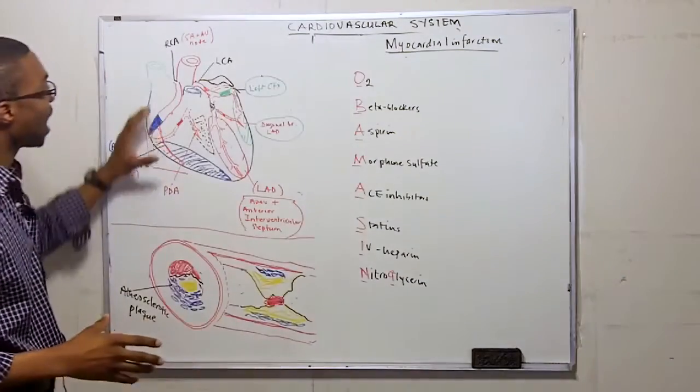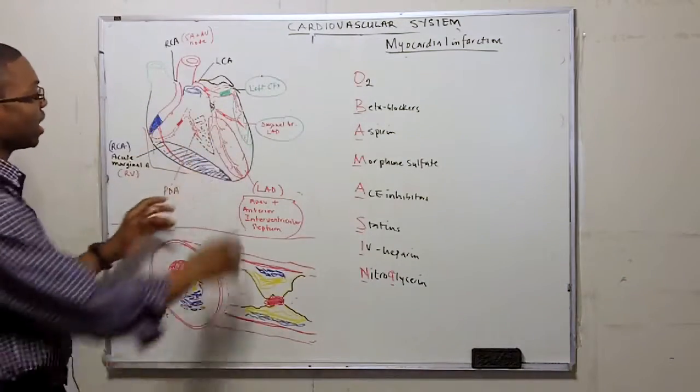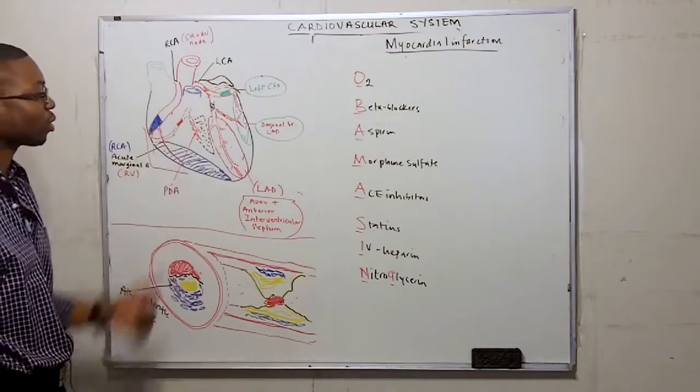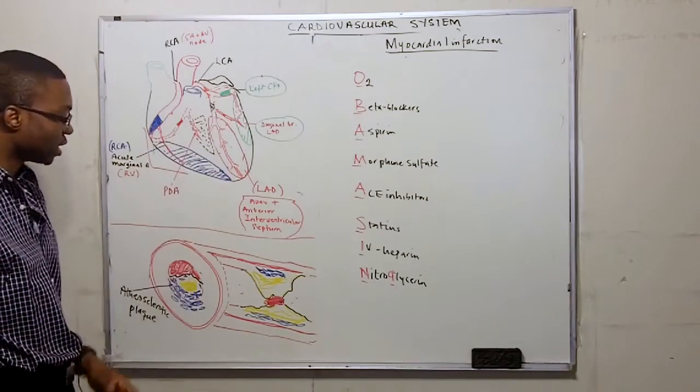On the left side of the page, I've shown a picture of the heart and which arteries: the LAD, the left circumflex, right coronary artery, and posterior descending artery.